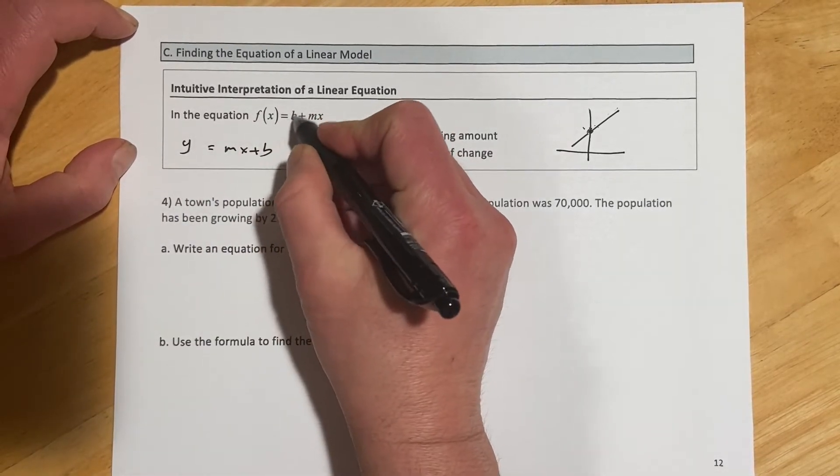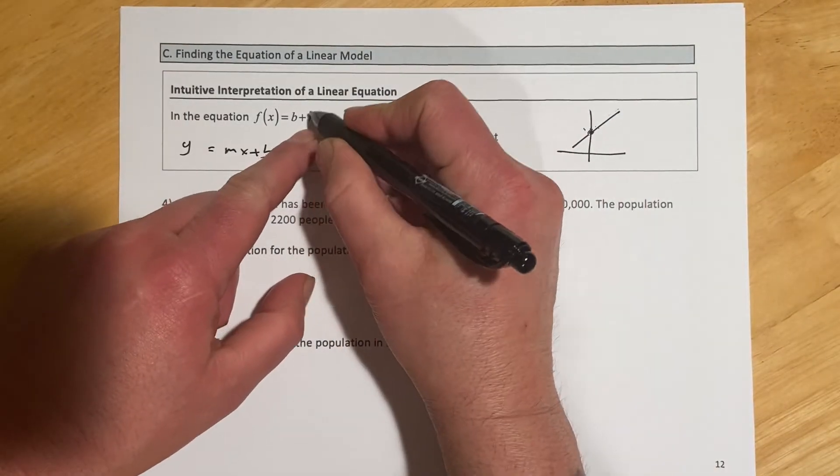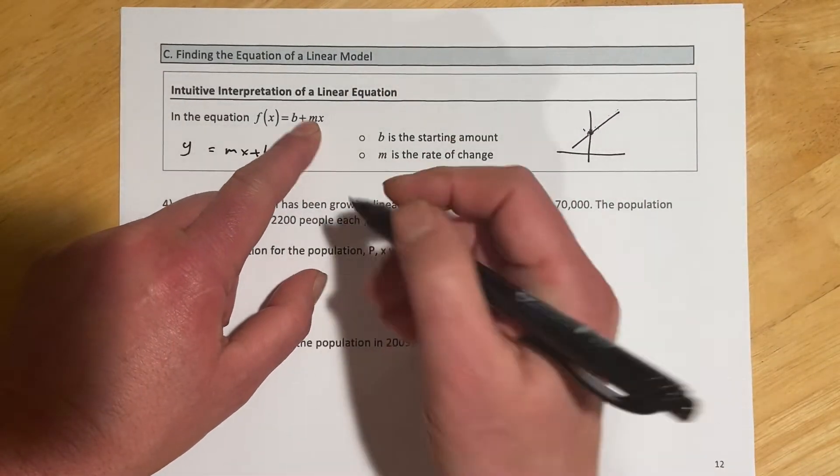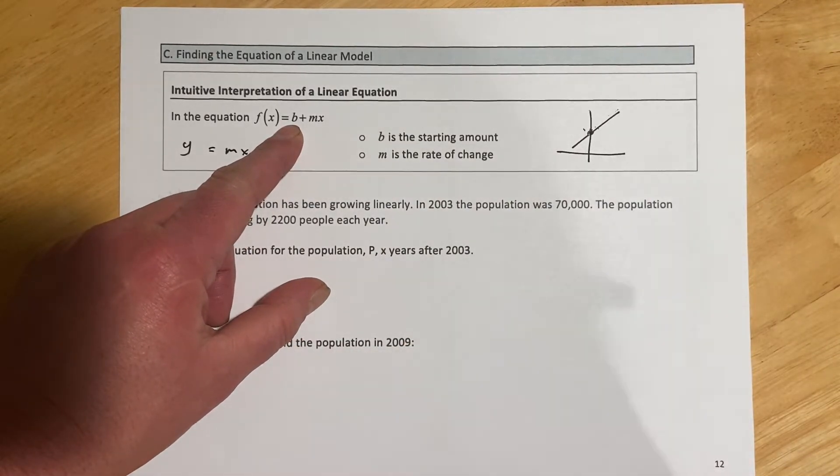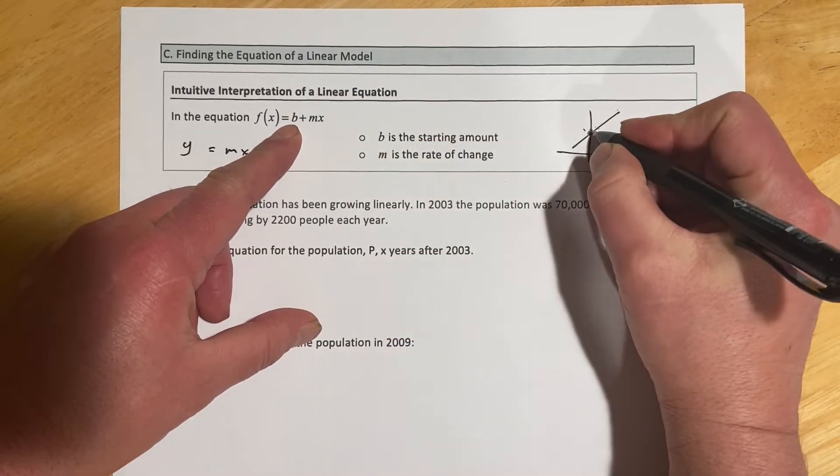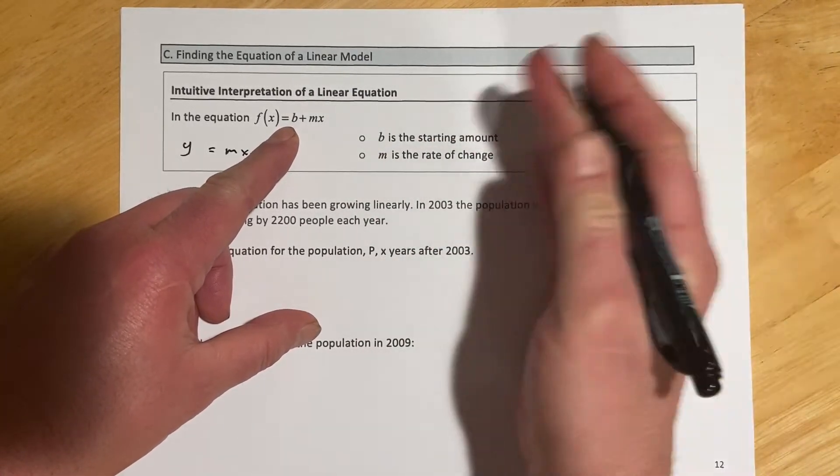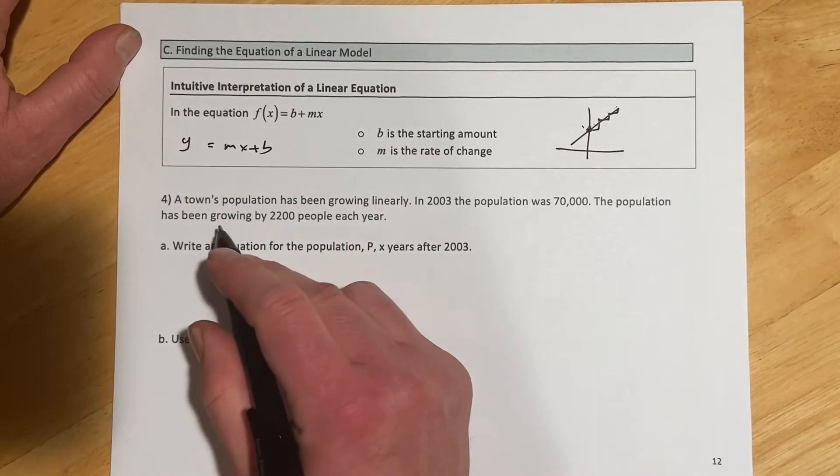But the idea is we're starting at some amount b, and then we're adding on to that with each change in x. We're getting this change in the slope, this amount that's going to get added on to this initial quantity. So b is like where we're starting, and then m is how it's going to change as we change x.